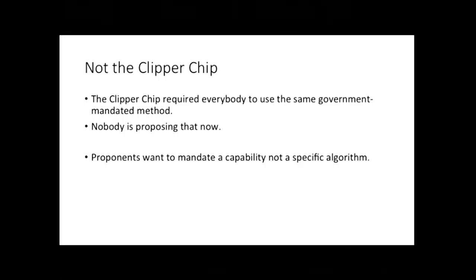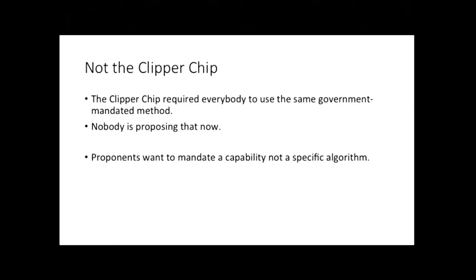Giving implementers some freedom to decide exactly how to implement a capability makes some sense if you're going in the direction of a mandate. But saying that mandate advocates would give implementers some discretion does not exempt us from thinking hard about what the technical options and trade-offs are, because the policy decision depends on the real options real implementers would have. We can't get out of considering technical trade-offs by just saying 'you guys can work it out.' And to be absolutely clear — a mandate is not a decision that has been made.